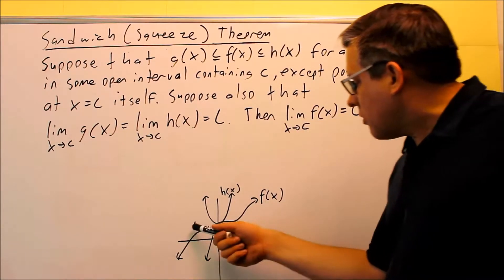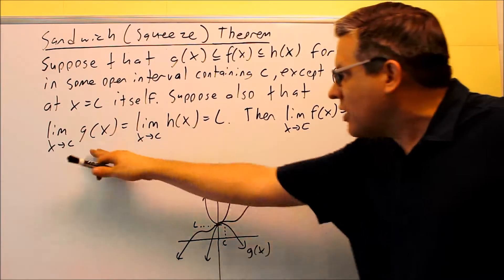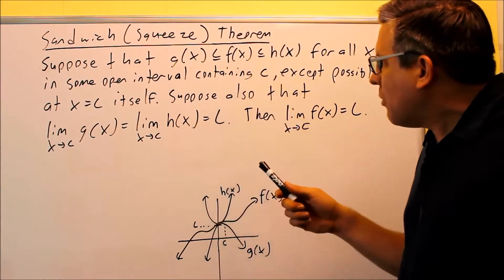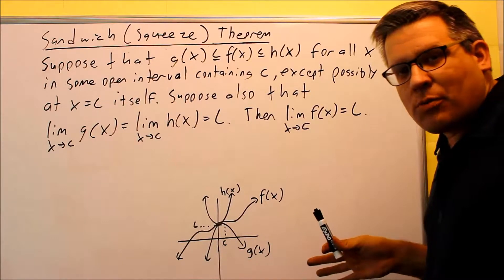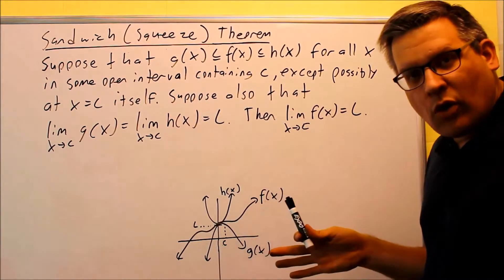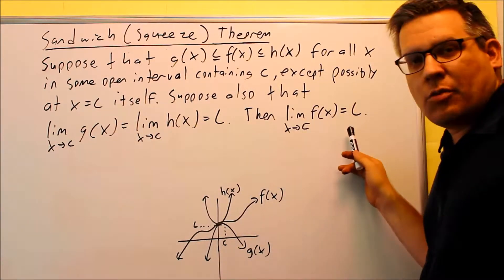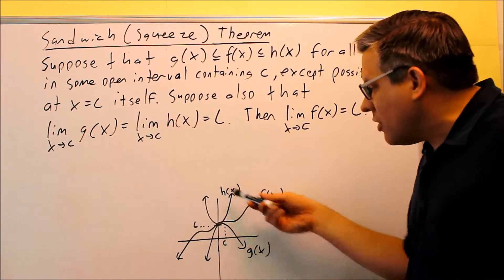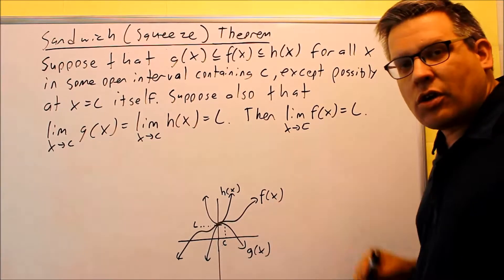If the limit of g and h both approach the same thing — and that's important, both of them have to approach the same thing — and if f is in between, then automatically f is going to approach L as well. So the main thing with these problems is you just want to find two functions g and h, and if you can find the limit of those two, then automatically you'll find the limit of the middle one because it's sandwiched or squeezed between h and g. Now let's look at a couple of examples.